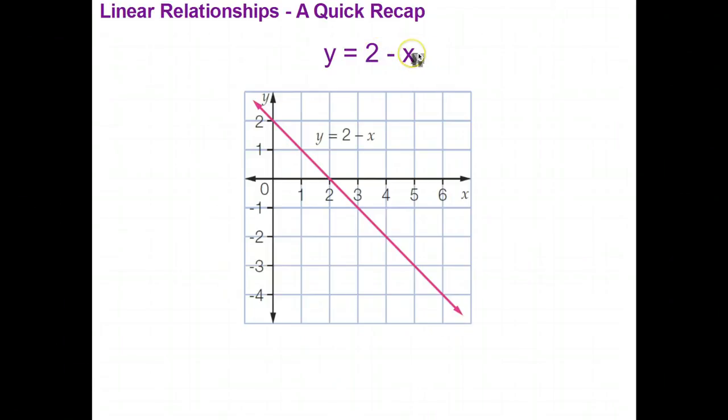Now x can be any number. For example, x could be 0. And then 2 subtract 0 is 2. And therefore when x is 0, y is 2. And that gives us, on the graph here, that just gives us that point.